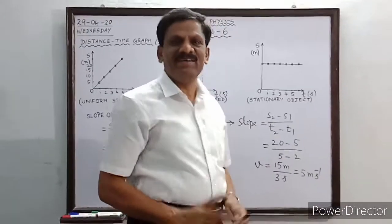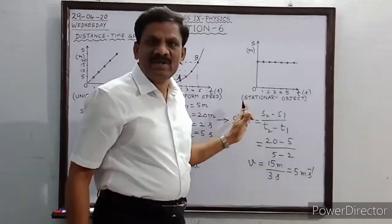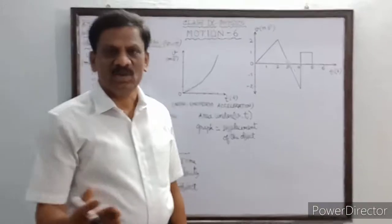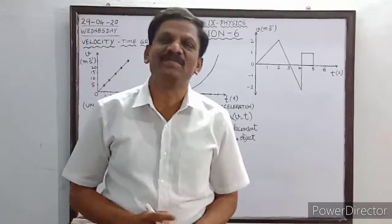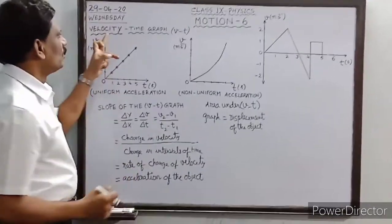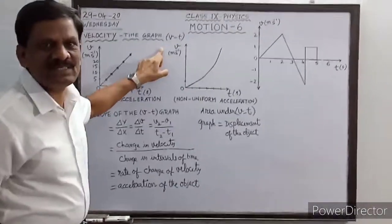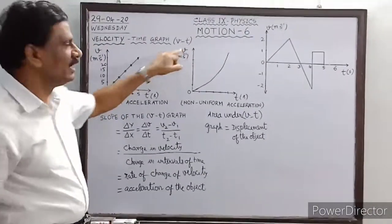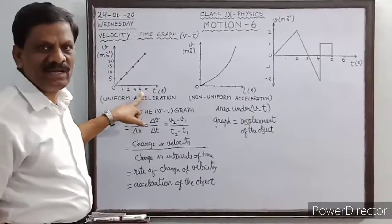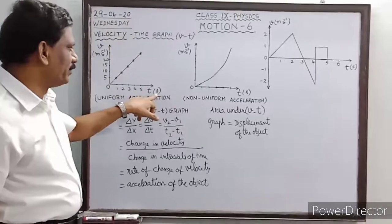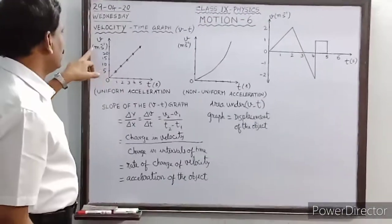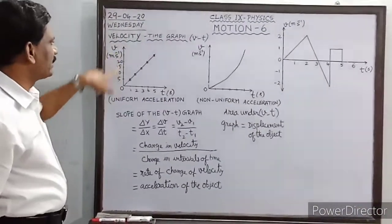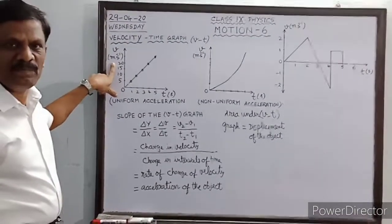Next, we are going to study the velocity-time graph, also called the V-T graph or V versus T graph. As before, time is taken along the x-axis in seconds, and velocity V is taken along the y-axis in meters per second.